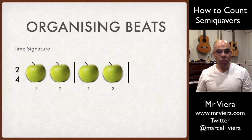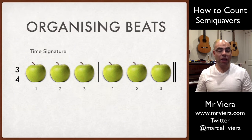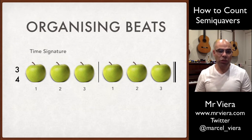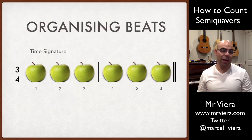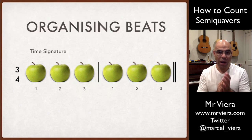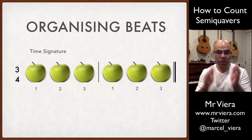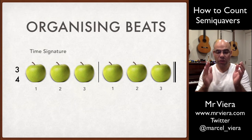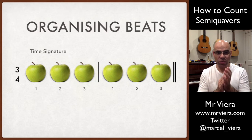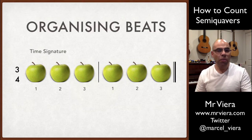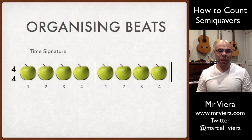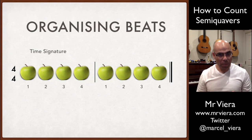Similarly, we have a three-four time signature which simply means that we're going to have three apples, so in this example we would have: one, two, three, one, two, three.